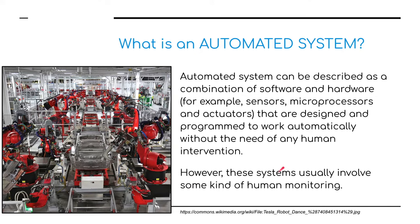What is an automated system? Here we are at the Tesla factory with lots and lots of robots. Automated systems can be described as a combination of software and hardware — for example, sensors, microprocessors, and actuators — that are designed and programmed to work automatically without the need for any human intervention, such as self-driving trains.